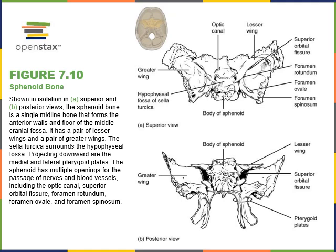Here we have a view of the sphenoid bone. The sphenoid forms the anterior part of the anterior floor of the cranium and articulates with all other cranial bones. There are two large broad surfaces — the greater wing and the lesser wing. The greater wing is larger and more inferior; the lesser wing is smaller and more superior.